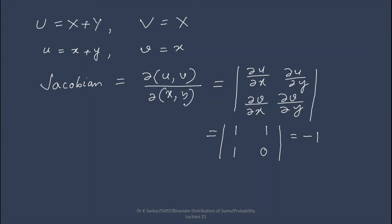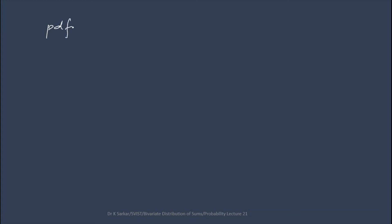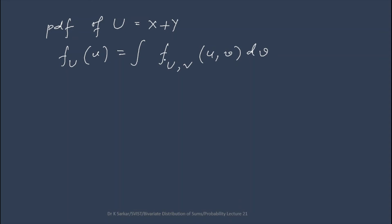The Jacobian del(u,v)/del(x,y) has the same sign. According to the previous theorem, f(u,v) equals f(x,y) multiplied by the Jacobian. In this case, f(u,v) is 1 only.